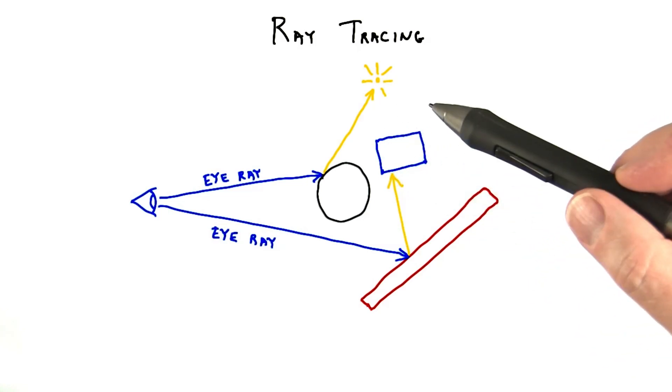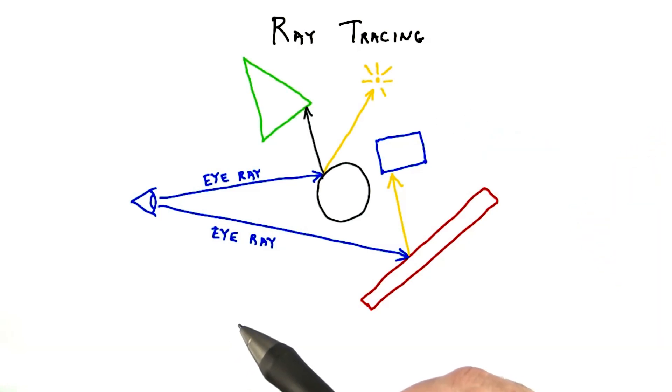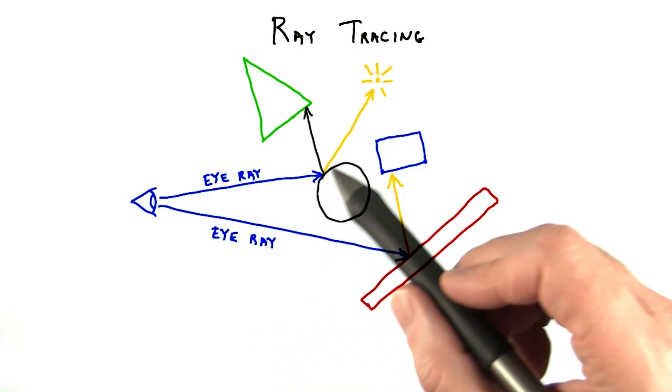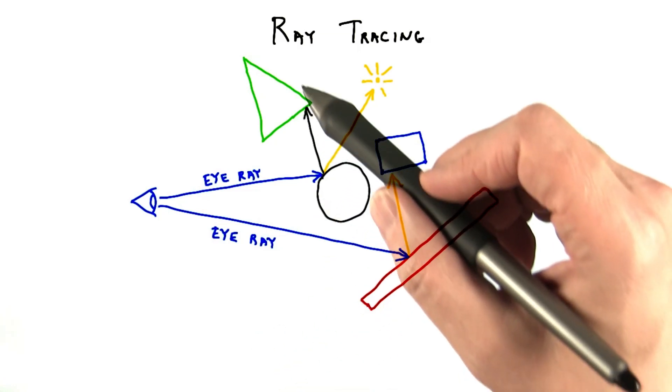Since all computations happen in world space, we can avoid many of the precision problems found in rasterization techniques such as shadow mapping. Classical ray tracing also offers us the ability to create true reflections and glass effects. For shiny surfaces, we can spawn a new ray in the reflection direction.